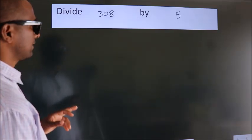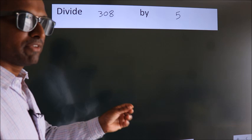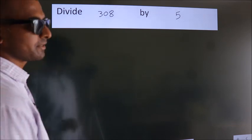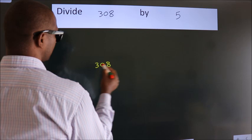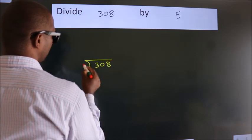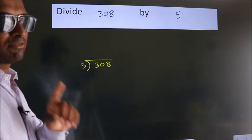Divide 308 by 5. To do this division, we should frame it in this way. 308 here, 5 here. This is your step 1.